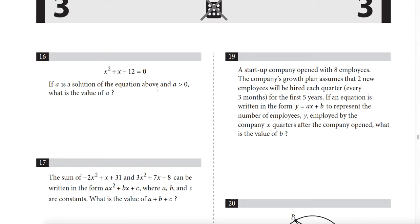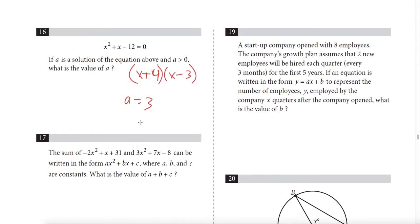Question 16: we need the factors of −12 whose sum is 1, which are +4 and −3, giving (x + 4)(x − 3). We need the positive solution, so x − 3 = 0 means a = 3.